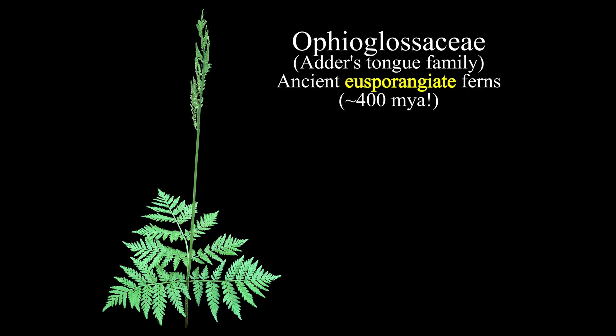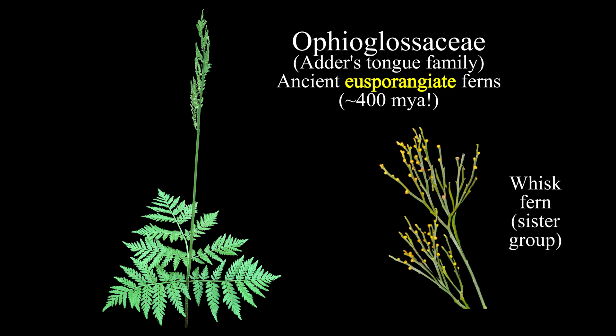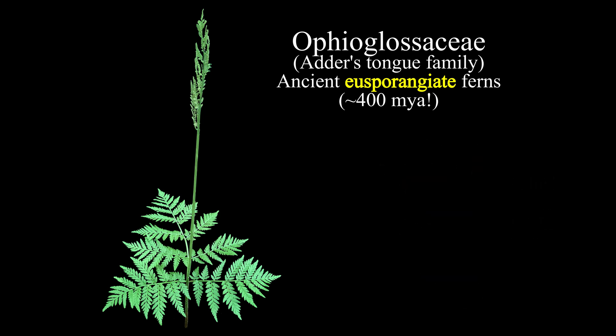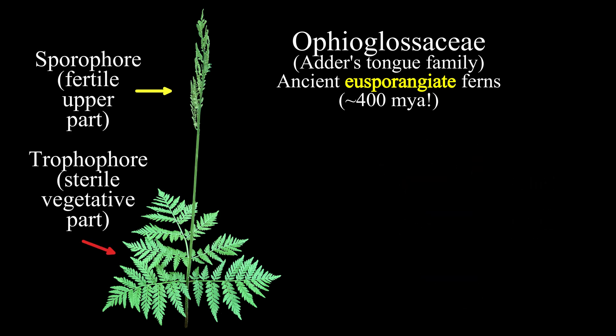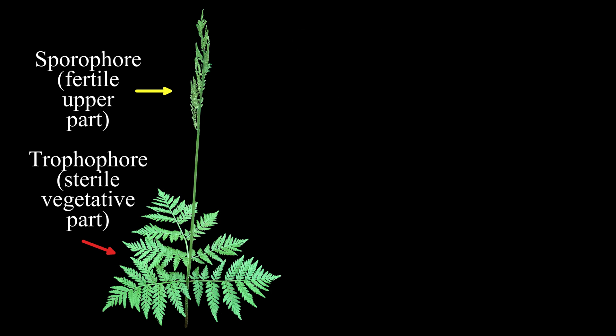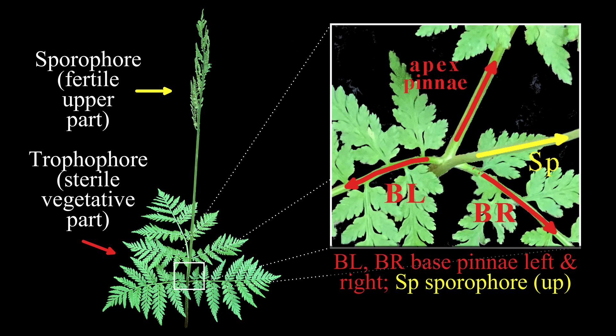Ophioglossaceae is a very old family of ferns with some of the earliest vascular land plants, along with horsetails and whisk ferns. This is a single leaf with two segments. Some terminology is required: the trophophore is the vegetative part, and the stalked sporophore holds the spherical sporangia up high. The two segments are joined at the photosynthesizing trophophore, which is horizontal to the ground.